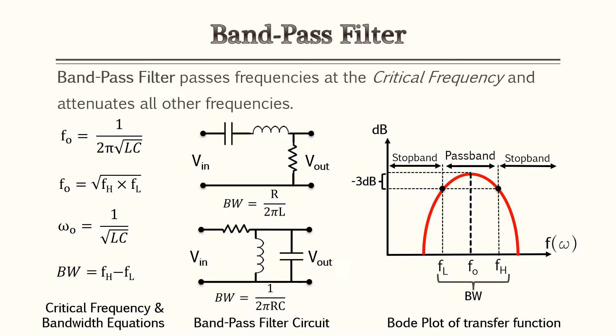The third common filter is a band pass filter, which is a combination of a low pass filter and a high pass filter. The band pass filter passes frequencies at the critical frequency only and attenuates all other frequencies. You'll have that critical frequency mark passing only that frequency; as you go lower it rolls off, and as you go higher it also rolls off — so it looks like a hill on a Bode plot. Simple band pass filter circuits and their associated equations are provided.